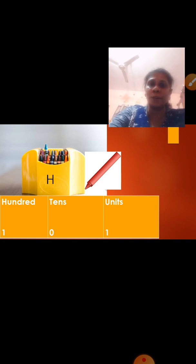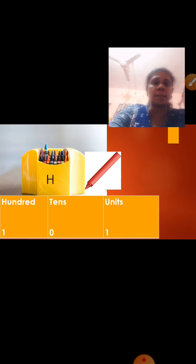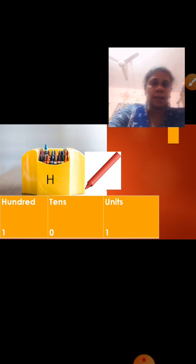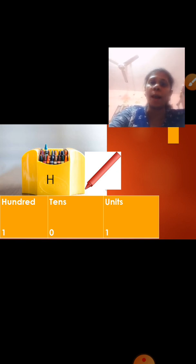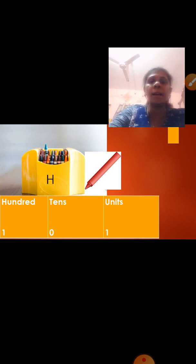Now see what you can see on your screen. There is one crayon box and one crayon is outside the box, and below we have 3 columns: hundreds, tens, and units. On the crayon box it is written H, and H stands for 100. How many H? 1 H. So in the hundreds column we write 1. Is there any tens value? No, it is not there. How many units are outside the box? It is 1, so we write 1 in the unit place. So what is our number? 101.